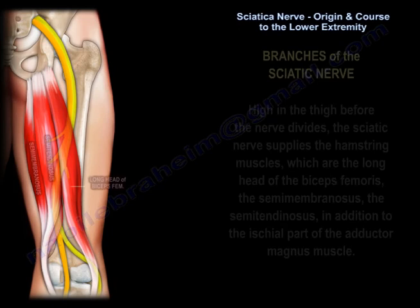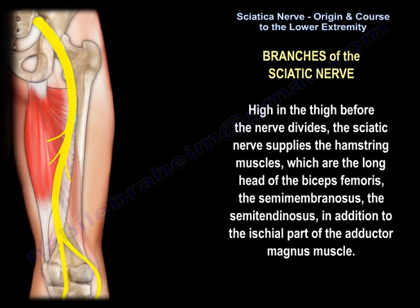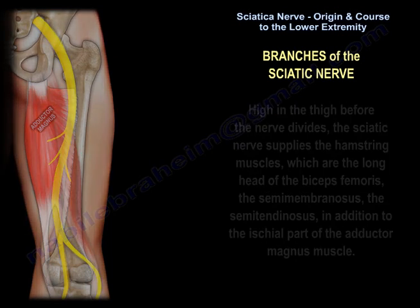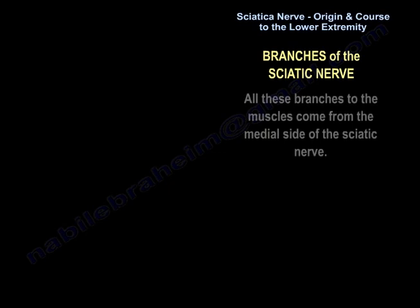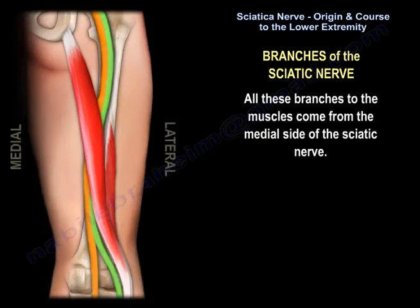High in the thigh before the nerve divides, the sciatic nerve supplies the hamstring muscles, which are the long head of the biceps femoris, the semimembranosus, the semitendinosus, in addition to the axial part of the adductor magnus muscle. All these branches come from the medial side of the sciatic nerve.